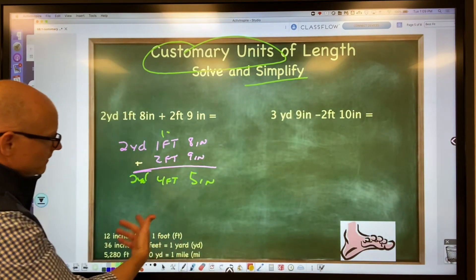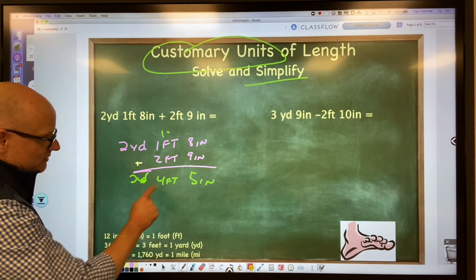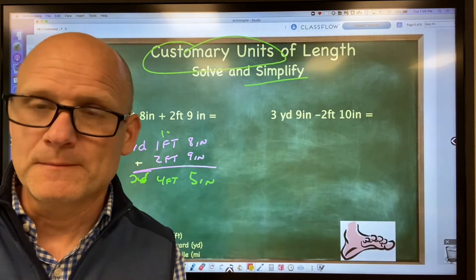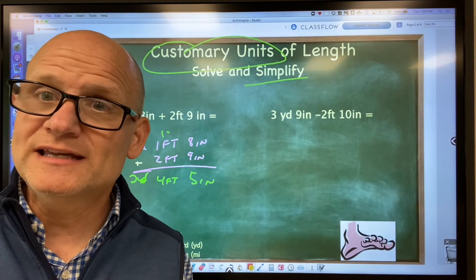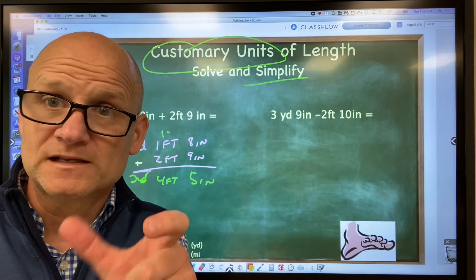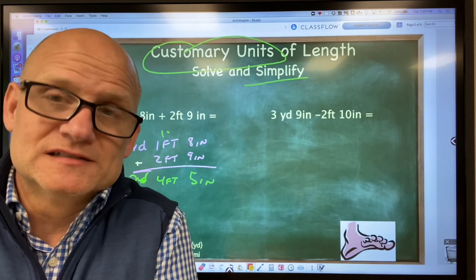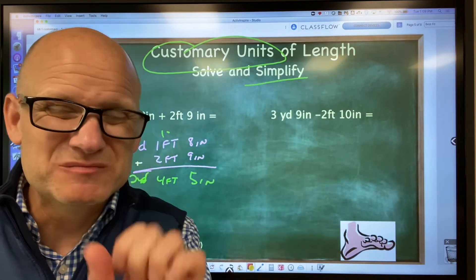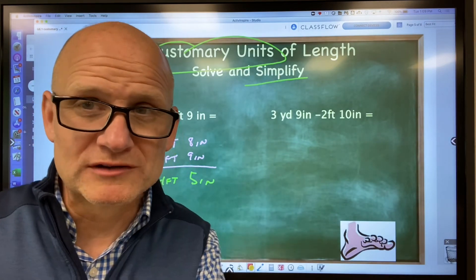The other thing this assignment says is simplified. What does that mean? Well, yes, I do have four feet, but if we can take out a larger unit, let's do that. That would mean simplified. I have four feet, which means I have one yard with three feet remaining. Right here is really one yard, three feet.